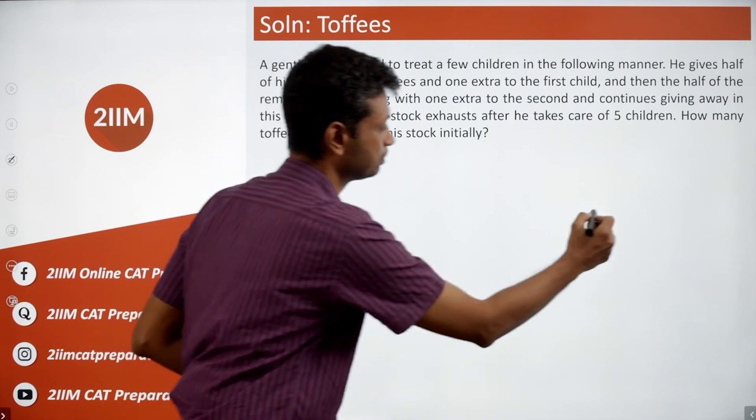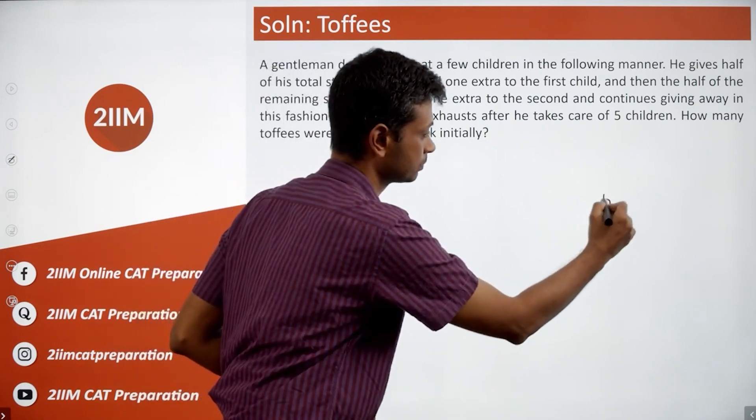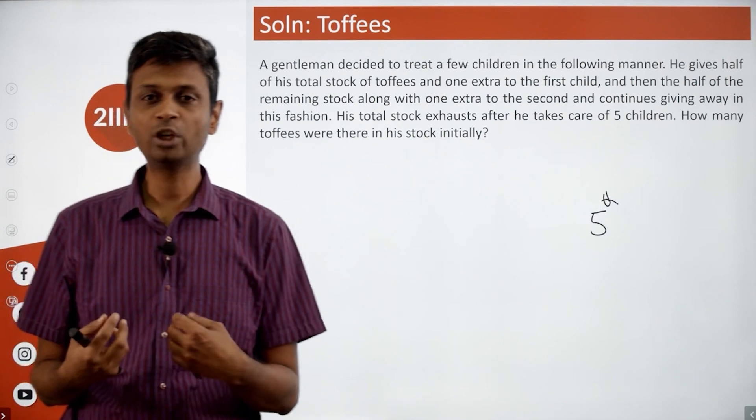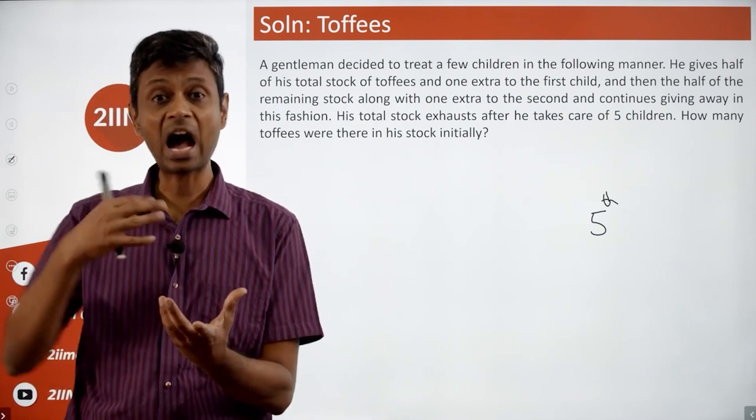I'm going to think about the fifth kid. Think about what does he have with him when he goes to the fifth kid. He gives away half plus one.